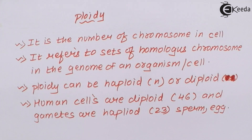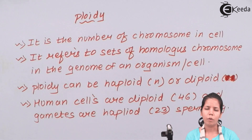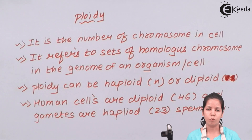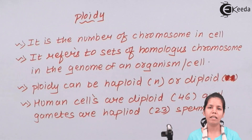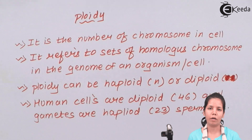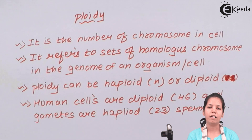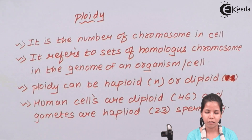Students, today in this part of the chapter we have studied about Ploidy — what are the sets of chromosomes, and how many chromosomes form the haploid and diploid number of chromosomes. I hope you are all clear about this concept of Ploidy. Thank you.